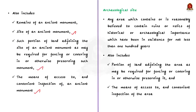Under Section 2(d) of the Ancient Monuments and Archaeological Sites and Remains Act 1958, an archaeological site and remains means any area which contains or is reasonably believed to contain ruins or relics of historical or archaeological importance that have been in existence for not less than 100 years, including adjoining land required for fencing or preservation and means of access to the area.